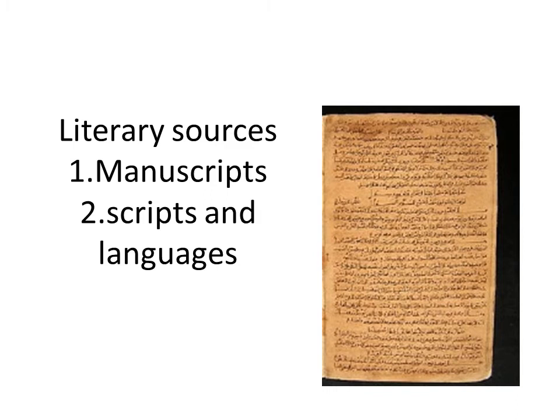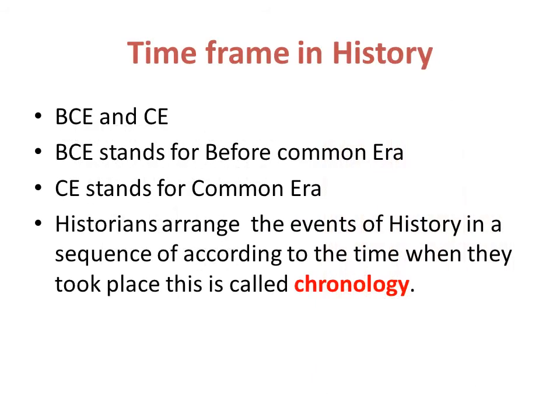For example, Kautilya's Arthashastra, the Indica written by the Greek ambassador Megasthenes in the court of Chandragupta Maurya, and the writings of Chinese travelers Fa Hien and Xuanzang — these describe the political, social, and economic life of a certain period.